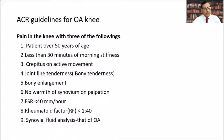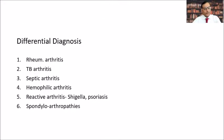Additional criteria include ESR less than 40 mm/hour, rheumatoid factor at a ratio of 1:40, and synovial fluid analysis typical of osteoarthritis. Any three of these nine criteria along with pain in the knee clinically confirms that we are dealing with osteoarthritis of the knee.